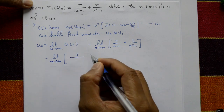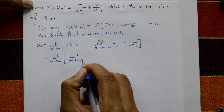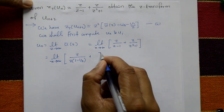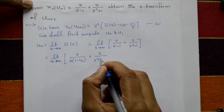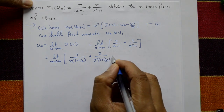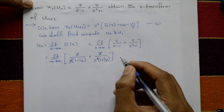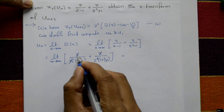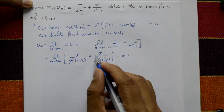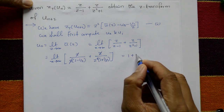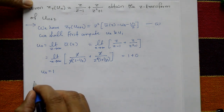Taking z outside as common in the numerator and denominator: first term becomes 1/(1 - 1/z), second term becomes 1/(z · (1 + 1/z²)). Applying the limit as z tends to infinity, 1/z tends to zero, so the first term gives 1 and the second term gives 0. Therefore u(0) equals 1.